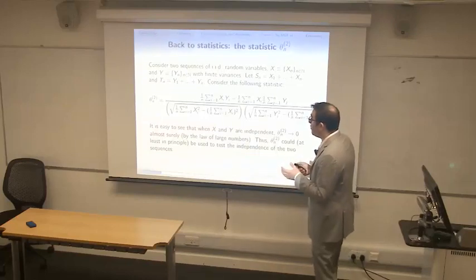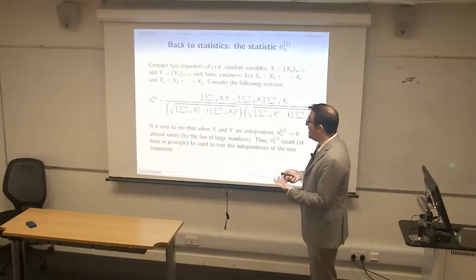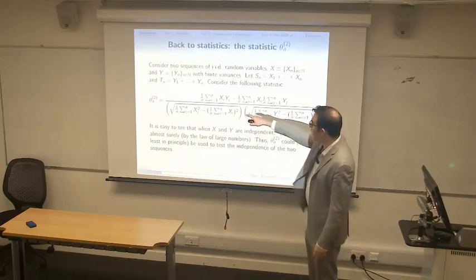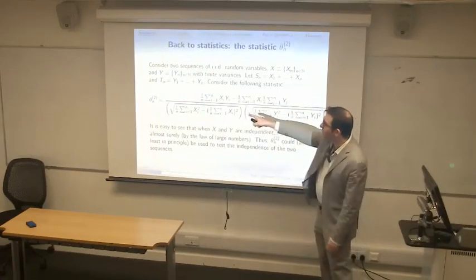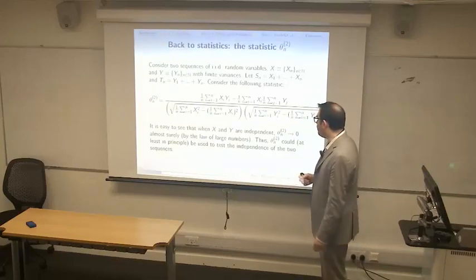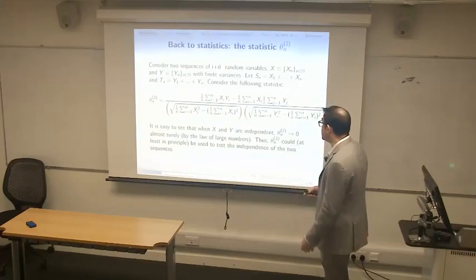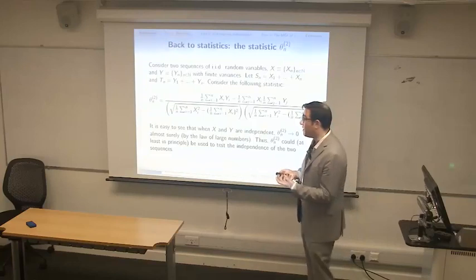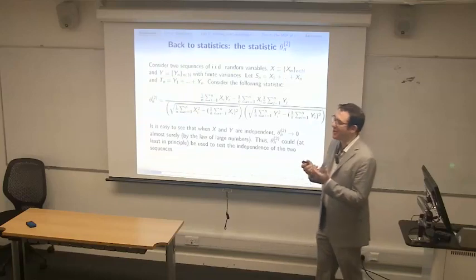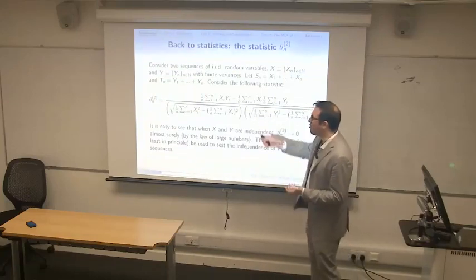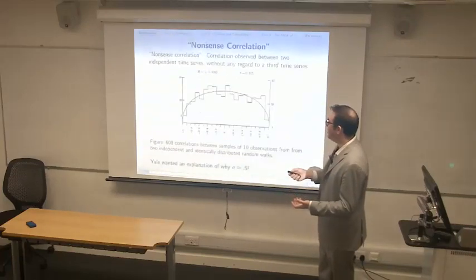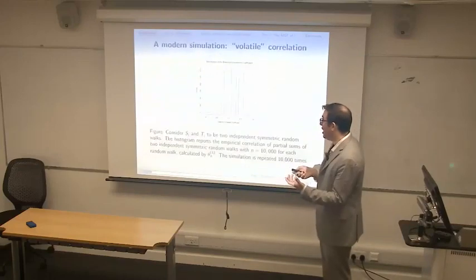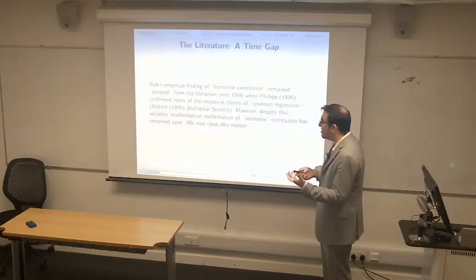Before going into analytics, let's revisit the statistic. I have theta_N^1, but I also have theta_N^2, where instead of writing partial sums, I write the random variables X_i and Y_i directly. When X and Y are independent, theta_N^2 converges to zero almost surely by the law of large numbers. But in time series we have time dependence, so everything written in S_1 would be X_i plus some epsilon, making theta_N^2 useless for temporal dependence.